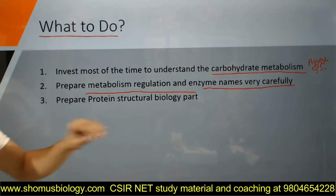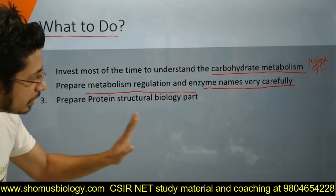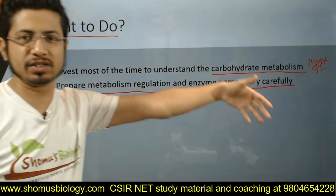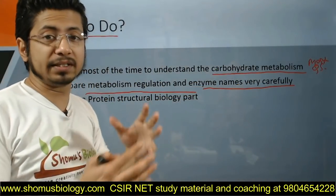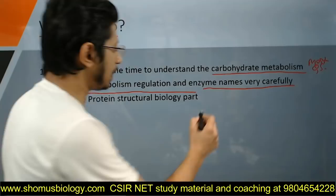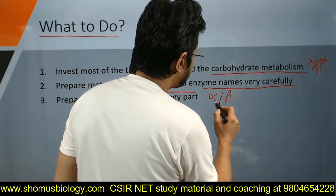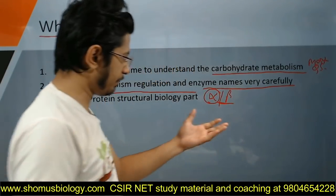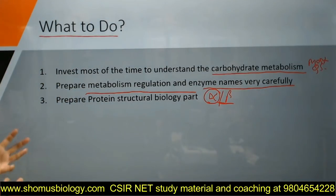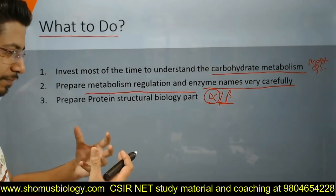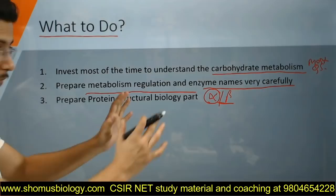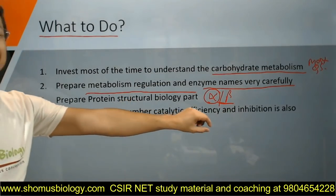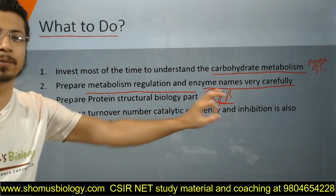Prepare the protein structural biology part very well. This covers primary, secondary, tertiary, and quaternary structure, with particular focus on secondary structure - alpha helix and beta sheet, the different varieties of helix including alpha and 3-10 helix, how they differ, what makes them alpha helix or beta sheet, and the Ramachandran plot, which is very very important.